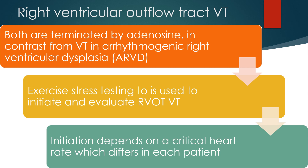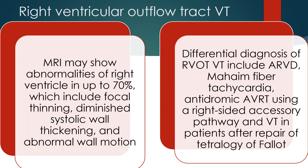Exercise stress testing is used to initiate and evaluate RVOT VT. Initiation depends on a critical heart rate which differs in each patient. MRI may show abnormalities of the right ventricle in up to 70%, including focal thinning, diminished systolic wall thickening, and abnormal wall motion. Differential diagnosis of RVOT VT includes ARVD, Mahaim fiber tachycardia, antidromic AVRT using a right-sided accessory pathway, and VT in patients after repair of tetralogy of Fallot.